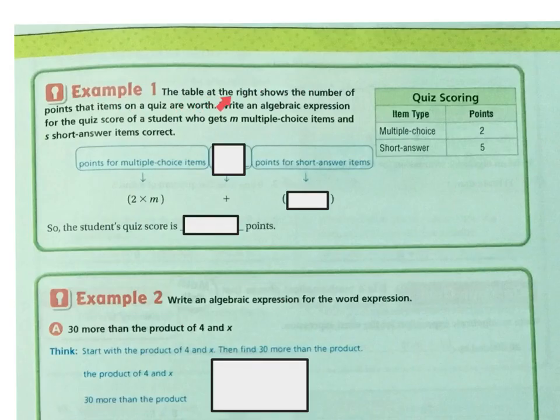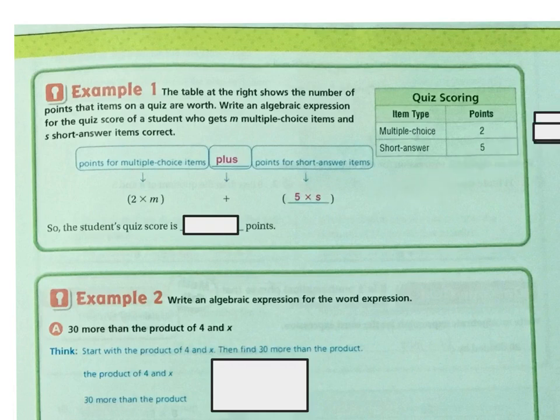Example 1. The table shows the number of points that quiz items are worth. Write an algebraic expression for the quiz score of a student who gets M multiple-choice items and S short-answer items correct. Multiple-choice items are worth 2 points each, so that's 2M. Short-answer items are worth 5 points each, so that's 5S. The student's quiz score is 2M plus 5S.